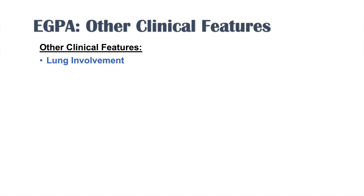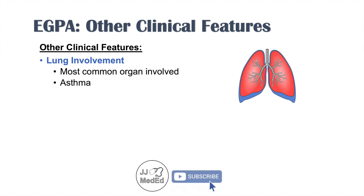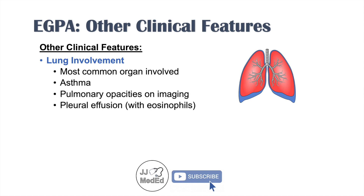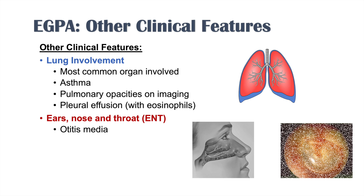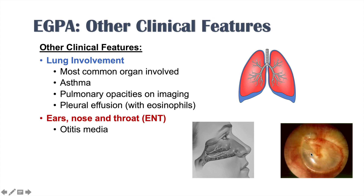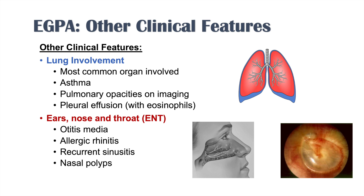There are many clinical features due to the condition's effect on small and medium-sized vessels. Lung involvement is the most common organ affected, causing asthma, pulmonary opacities on imaging, and pleural effusions that contain eosinophils. Ear, nose, and throat involvement includes allergic rhinitis, otitis media with a bulging tympanic membrane and fluid, recurrent sinusitis, and nasal polyps.